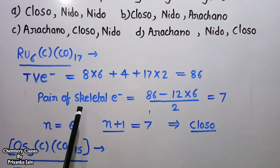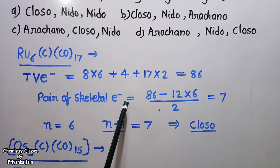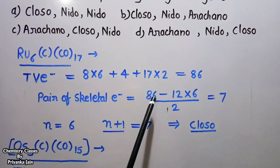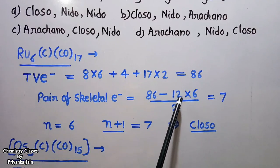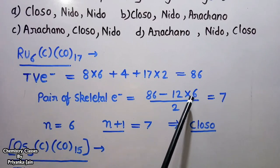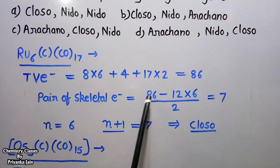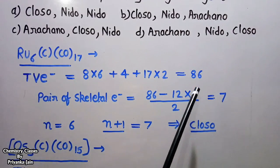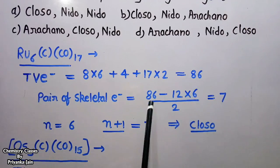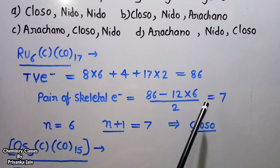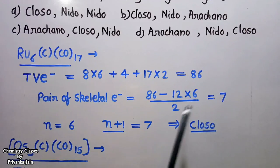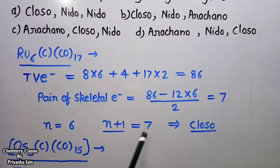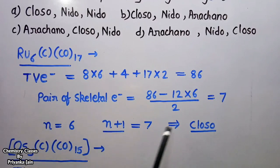The number of skeletal electron pairs for RU6C(CO)17 = (86 − 12×6) / 2 = 7 pairs. The number of vertices is 6. Since 7 = n + 1 (where n = 6), this belongs to the closo group.